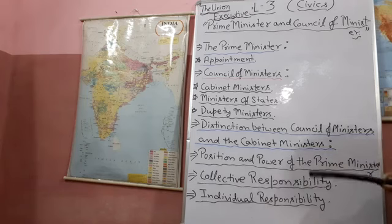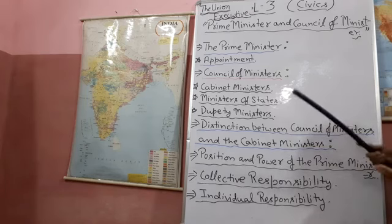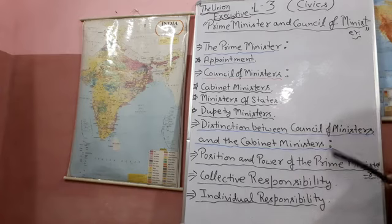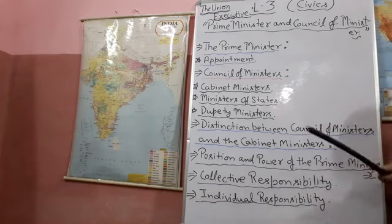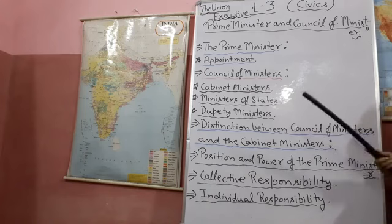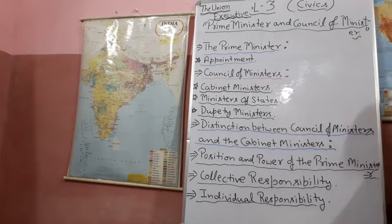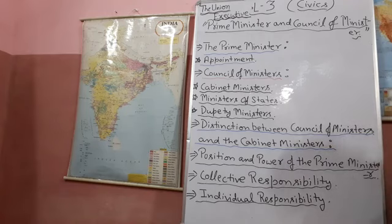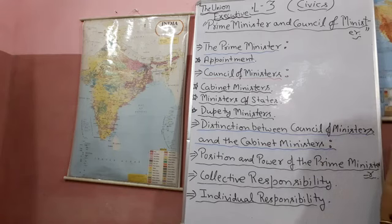A no-confidence motion is moved by a member or leader of the opposition. If the motion is carried, it implies loss of confidence and the government has to resign. So, up to this point it is there in this chapter. You read this chapter, listen to my lecture carefully, and whatever exercise work is there, you do it in your copy. Thank you. God bless you all.